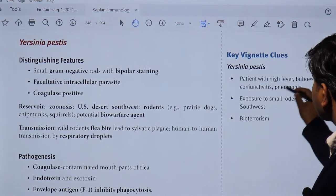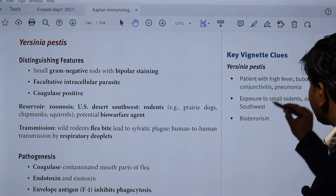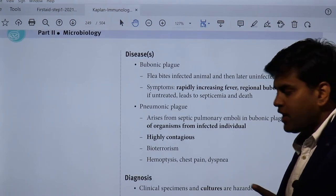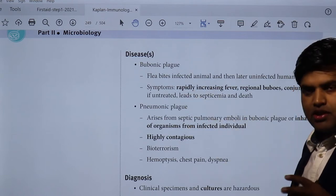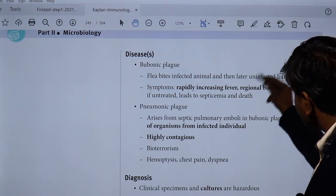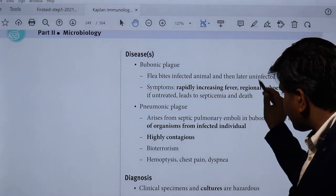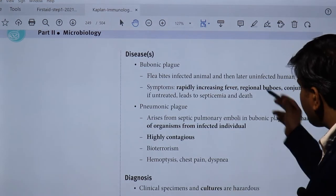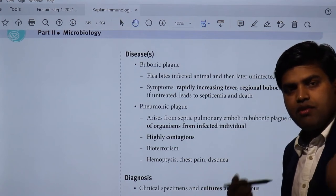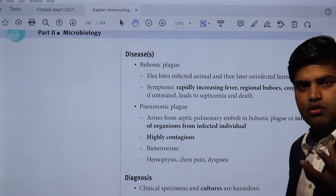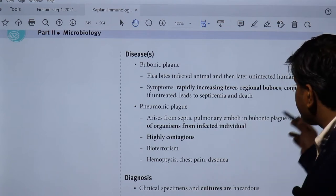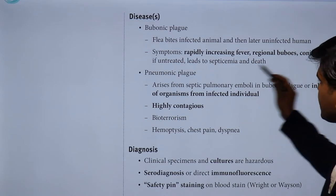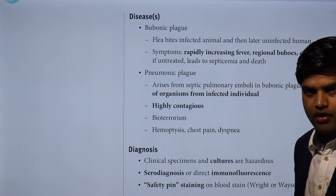Patients with Yersinia pestis infection present with high fever, buboes, conjunctivitis, and may develop pneumonia. Exposure is associated with small rodents in the desert southwest. There are two forms of disease: bubonic plague and pneumonic plague. In bubonic plague, a flea bites an animal and then an uninfected human. The patient develops rapidly increasing fever with regional buboes and conjunctivitis. If untreated, it leads to septicemia and death.